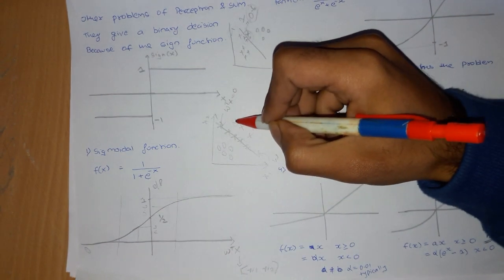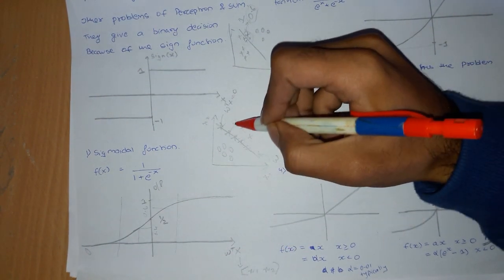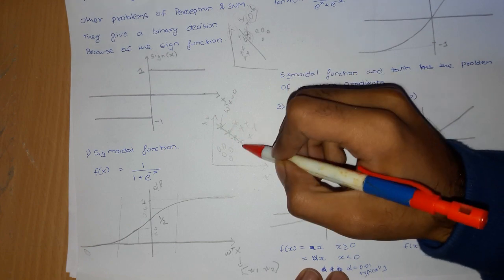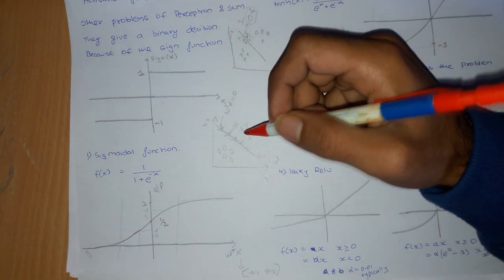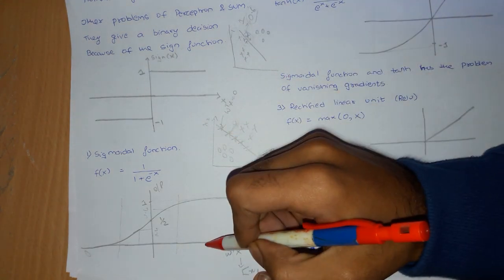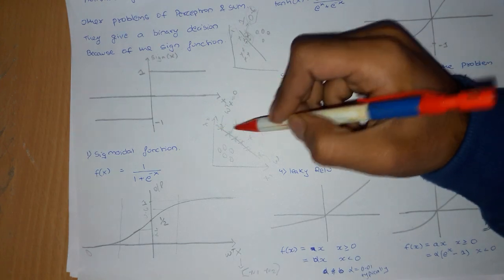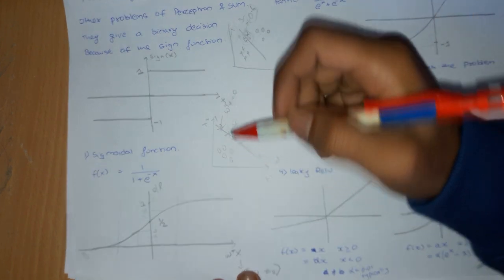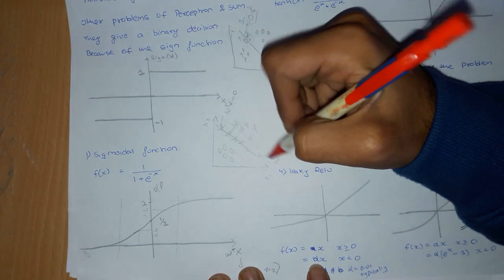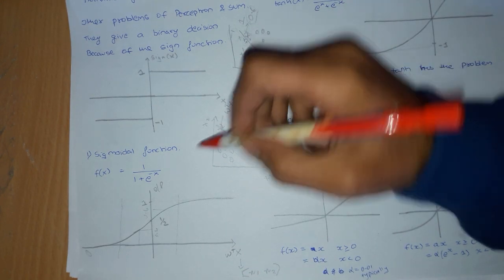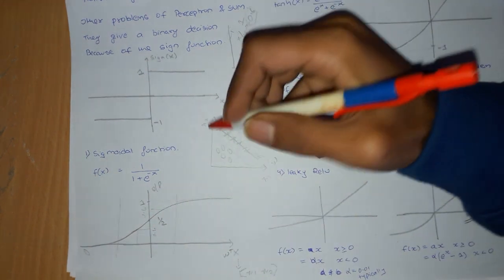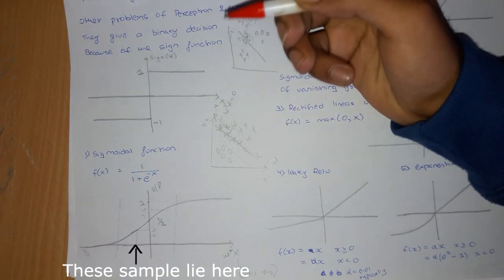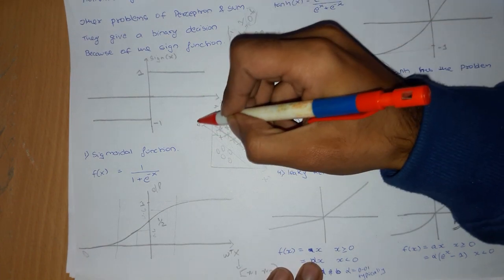For other samples, omega transpose x gives some particular value — basically the distance from the boundary. Instead of mapping those values to a sign function which binary-divides the classes, we can map them through the sigmoid so that a sample in one region gets a value like 0.4 and a sample near the boundary gets something like 0.5.